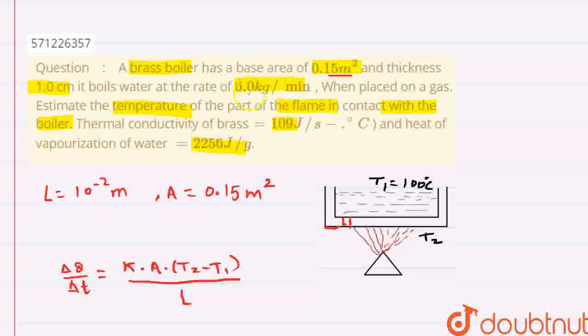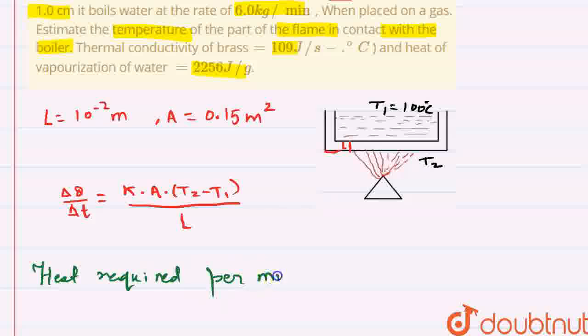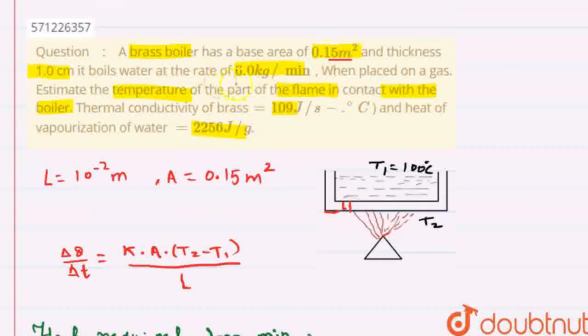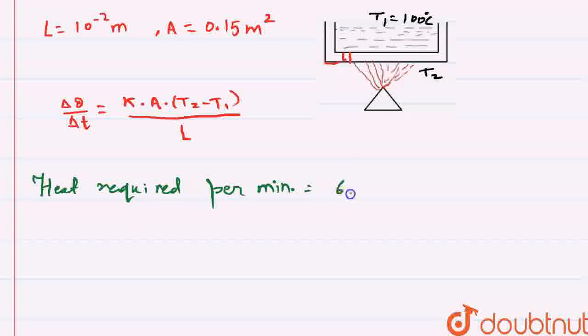Per minute, 6 kg of water is boiling. So per minute, the requirement of heat will be the amount of heat required to convert 6 kg of water into vapor.